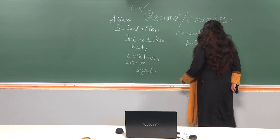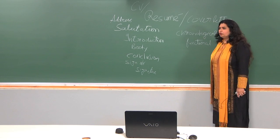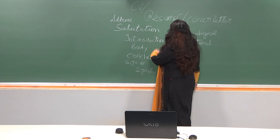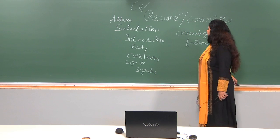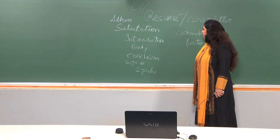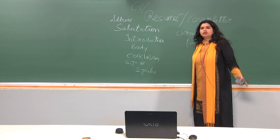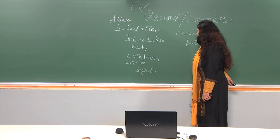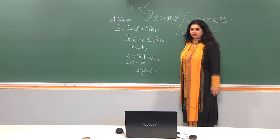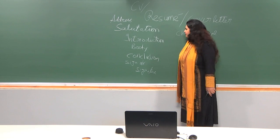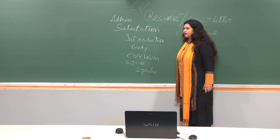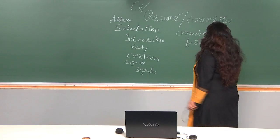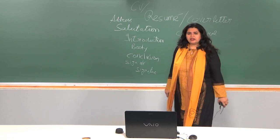A CV or resume can be categorized into two types: chronological and functional. For the cover letter, you have to remember how to write the address, salutation, introduction, the body, and conclusion. Go back to your recent lectures on essay writing and the various kinds of letters we have been doing. Remember that it is always a three-paragraph format, mostly. Conclusion, signing off, and signature — those are the salient features of a cover letter. CV and resume can be chronological or functional; we will see what the difference is.